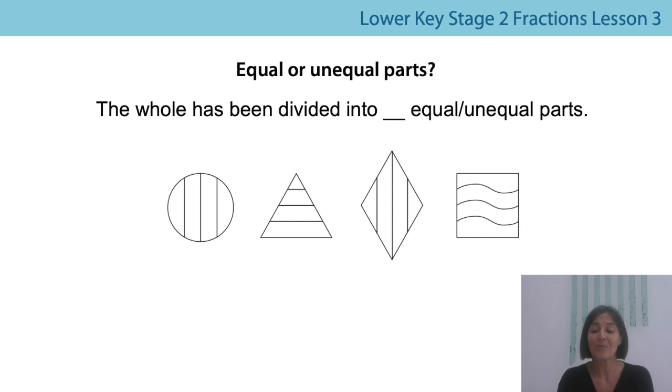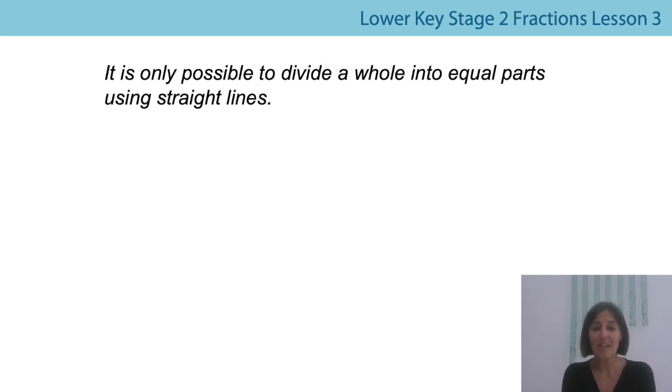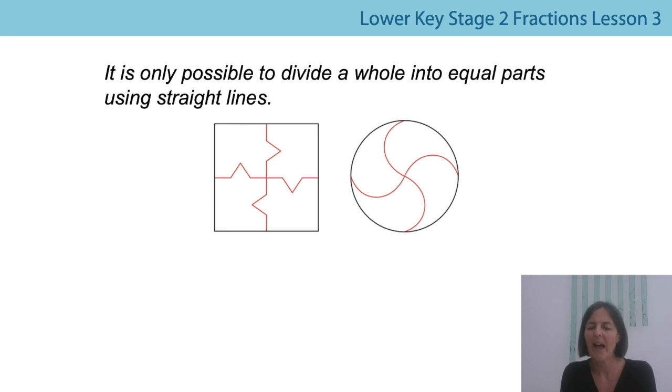Now are you ready for a challenge? Mr. Ted thinks it's only possible to divide a whole into equal parts using straight lines. Do you agree with him or do you disagree with him? You might want to pause again and have a little discussion with someone in your family. And it might help you if I show you these pictures. Maybe this will help. Have a look closely at these because these shapes have not been divided using straight lines. And are the parts equal or unequal? Now remember the trick that I showed you before. If we want to check where the parts are equal, we can always cut out a part and see if it fits on the other. So do you think that would be a good idea on this one? Let's give it a go.